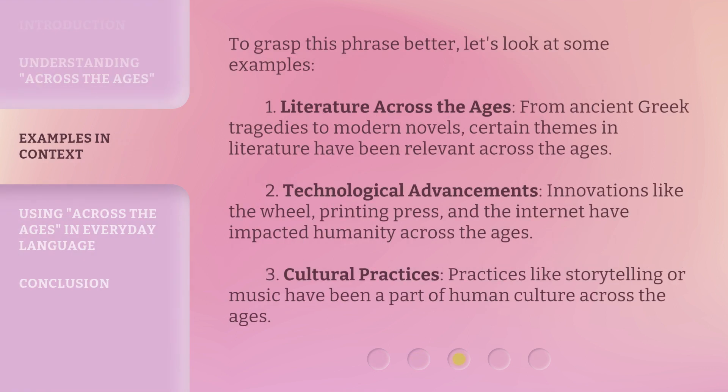To grasp this phrase better, let's look at some examples. 1. Literature: From ancient Greek tragedies to modern novels, certain themes in literature have been relevant across the ages. 2. Technological Advancements: Innovations like the wheel, printing press, and the internet have impacted humanity across the ages. 3. Cultural Practices: Practices like storytelling or music have been a part of human culture across the ages.